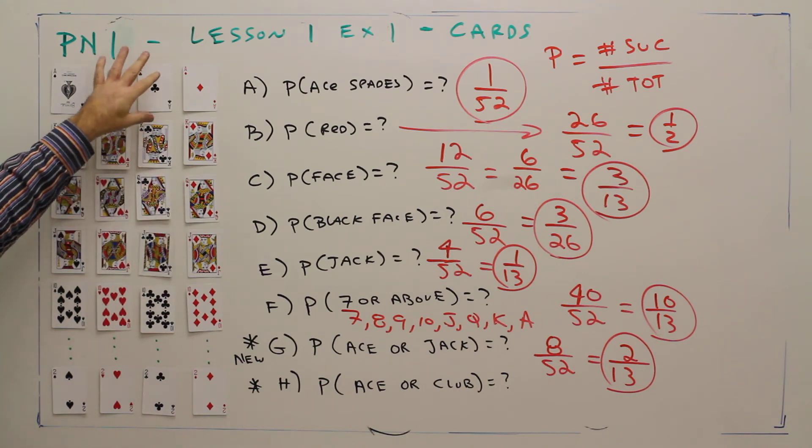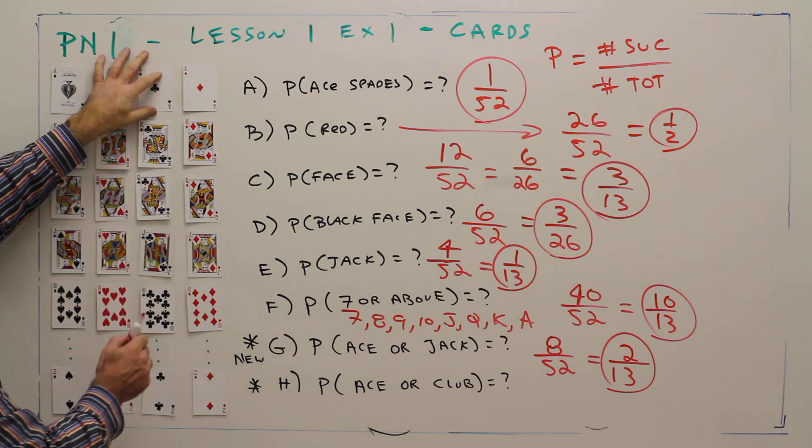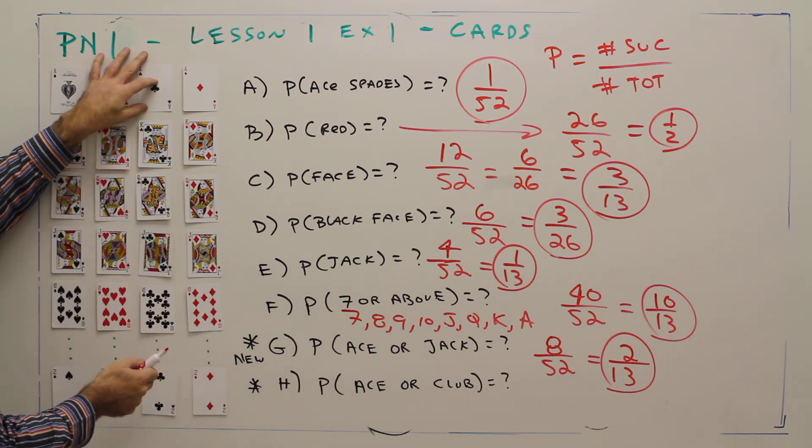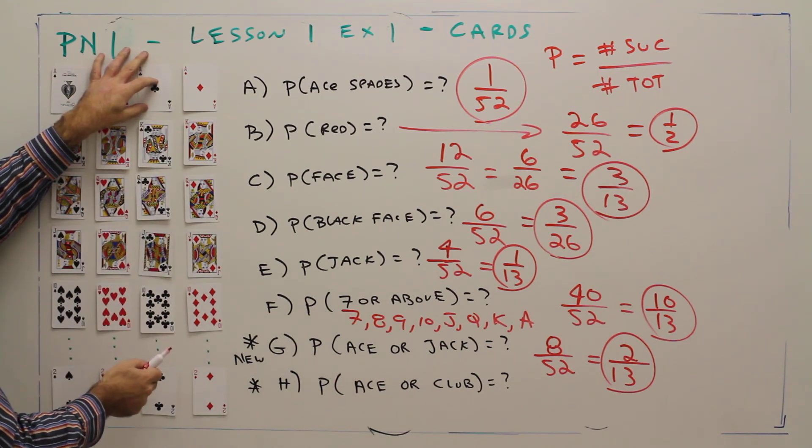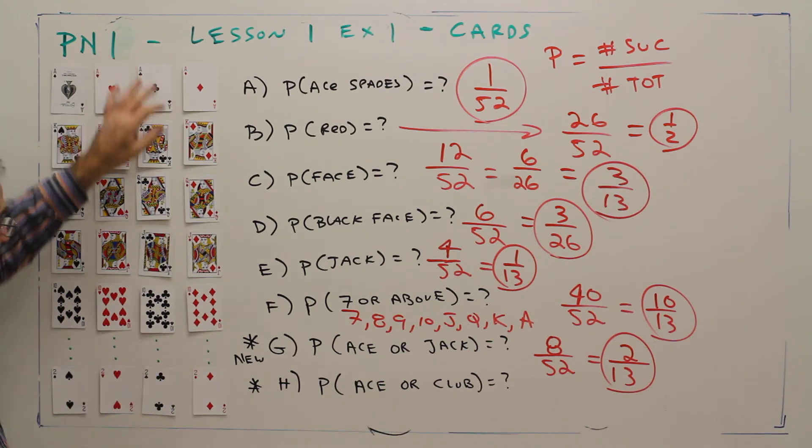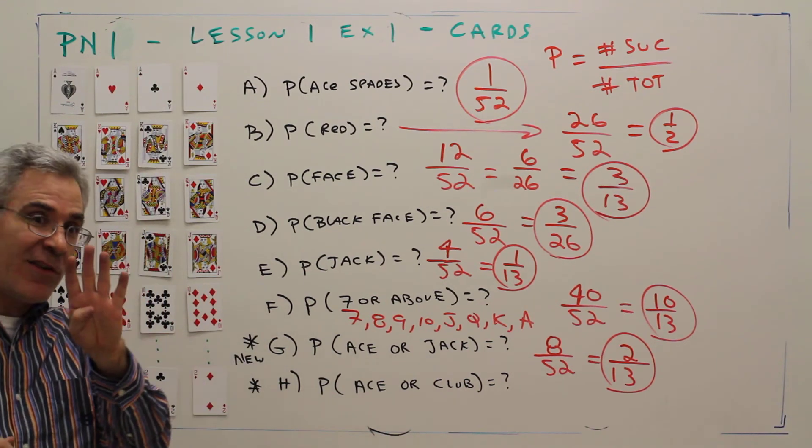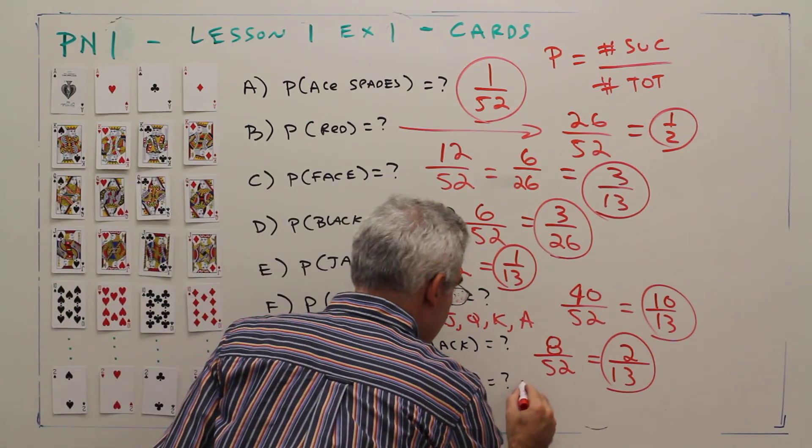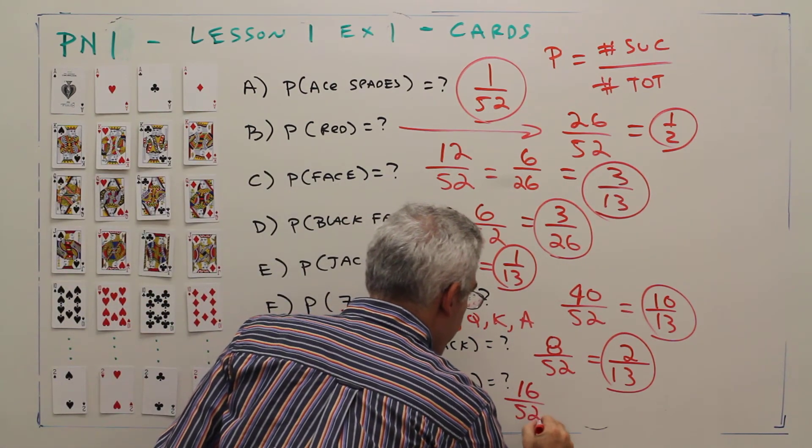So I've got 4 aces. One of them is a club. Then I've got 12 other successful outcomes, which are the 12 other clubs. So that's the 4 aces plus the 12 other clubs, which is 16 successful outcomes over 52.